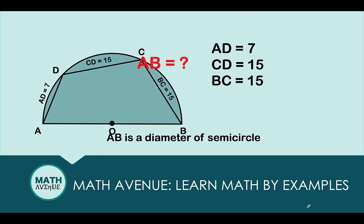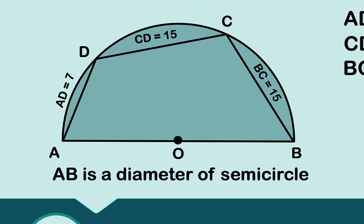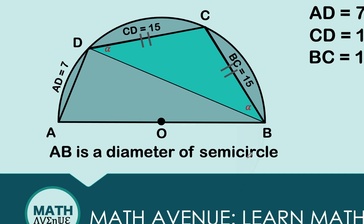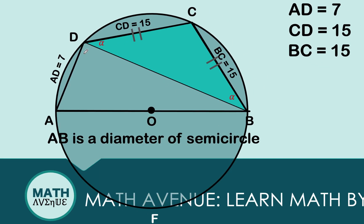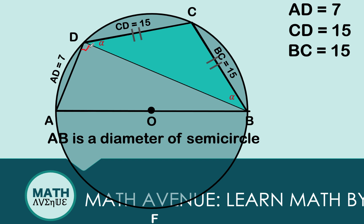Now let's solve this problem together. Since CD and BC are both equal to 15, we can draw an isosceles triangle. As a consequence, the base angles are equal. Let's assign alpha for the measures of these base angles. If we complete this semicircle into a circle, notice that angle ADB is an inscribed angle intercepting arc AFB. Since AB is a diameter, the measure of arc AFB is 180 degrees, and the measure of this inscribed angle is half of that — so angle ADB is a right angle.